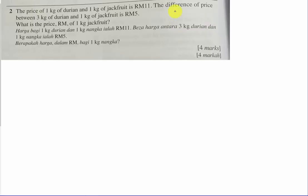The question says the price of 1 kg of durian and 1 kg of jackfruit is RM11, and the difference between the price of 3 kg of durian and 1 kg of jackfruit is RM5.